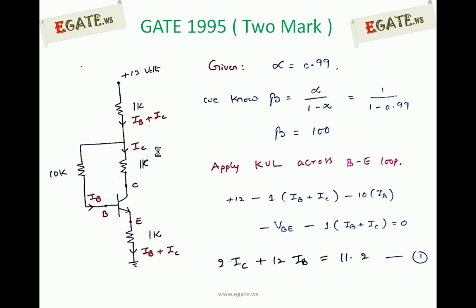Before proceeding, we calculate beta. Given alpha equals 0.99, the relation is beta equals alpha divided by (1 minus alpha), which gives 1 divided by (1 minus 0.99), equal to 100. So beta equals 100.